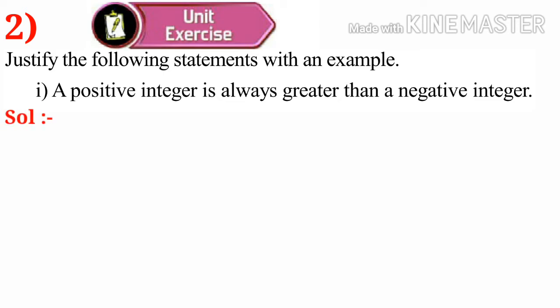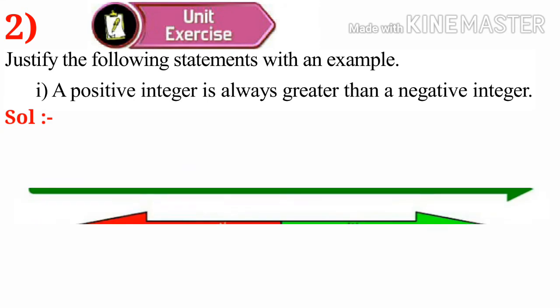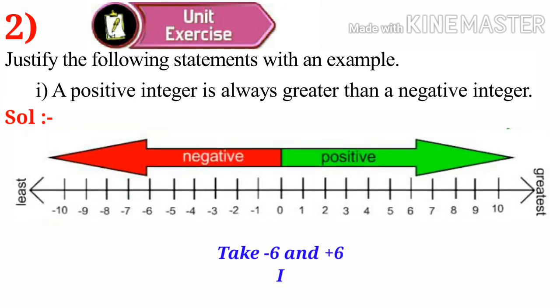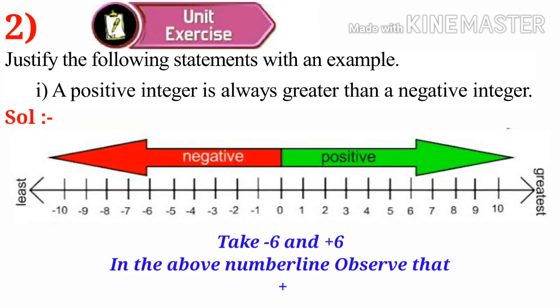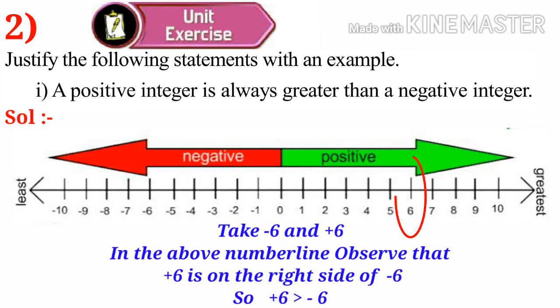Solution: take a number line and take minus 6 and plus 6 on the number line. Observe that plus 6 is on the right side of minus 6, so plus 6 is greater than minus 6. Therefore, a positive integer is always greater than a negative integer.